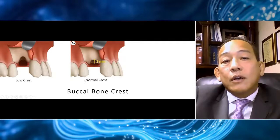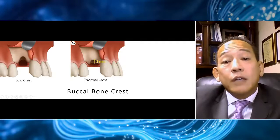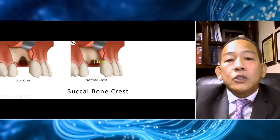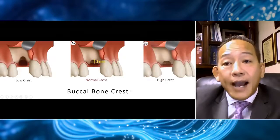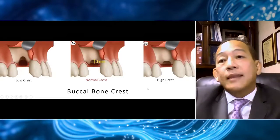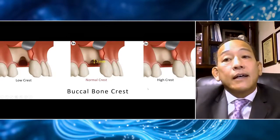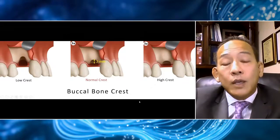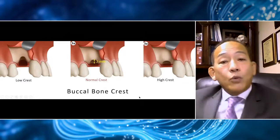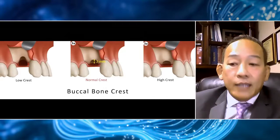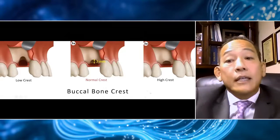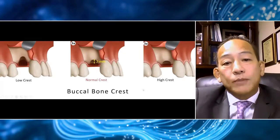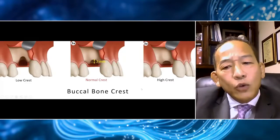Bone augmentation can often result in unpredictable healing due to resorption and remodeling. So ideally, if we can achieve a high crest, that's going to give us a little bit more insurance in terms of our result. When we're grafting, we want to get a high crest in anticipation of possible resorption — as part of the insurance.